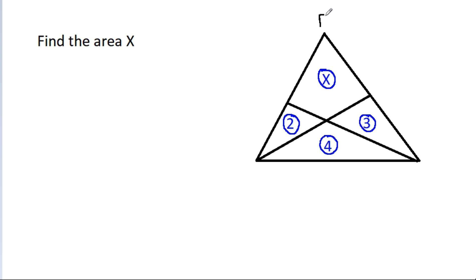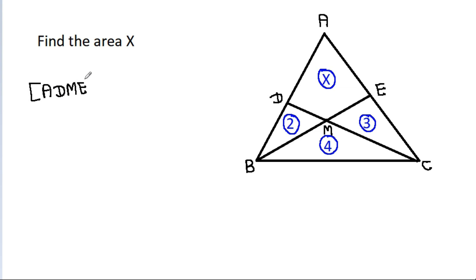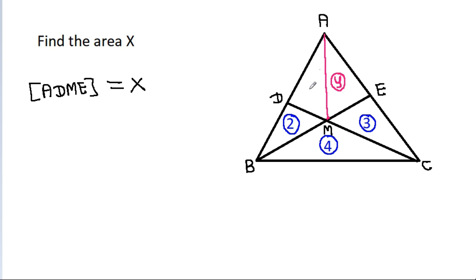Suppose this point is A, this point is B, this point is C and D, E, and this point is M. The area of A, D, M, E is equal to X. If we join A and M and suppose this area is Y, then this area will be X minus Y.